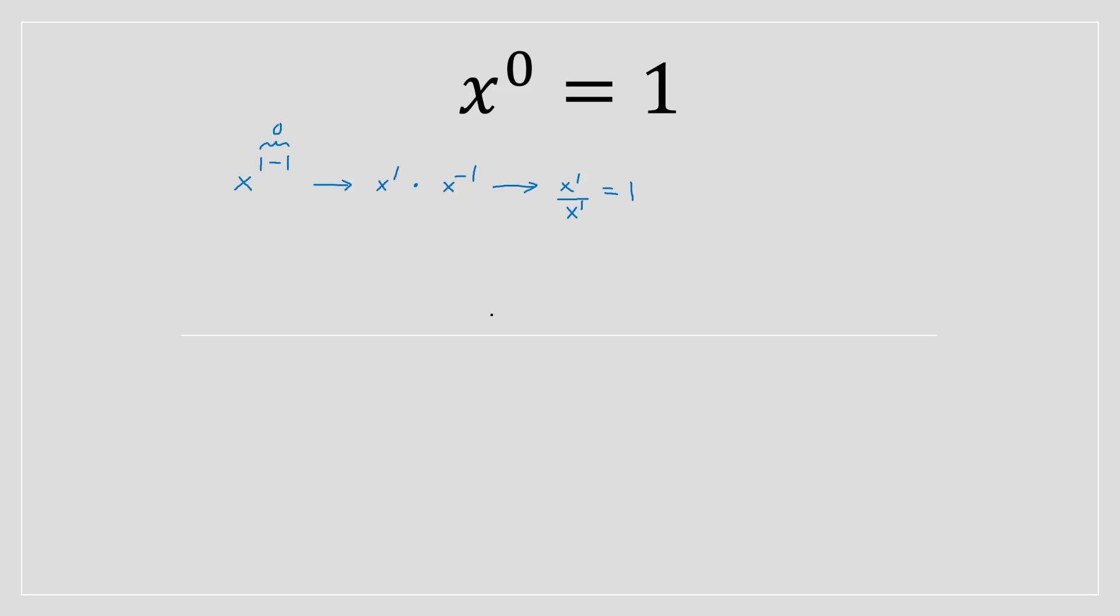And this is the reason why you can have any number as the base of the exponent. You can have any number and it's going to be equal to 1. So that's how you solve this type of proof.